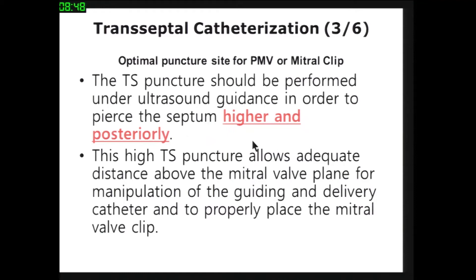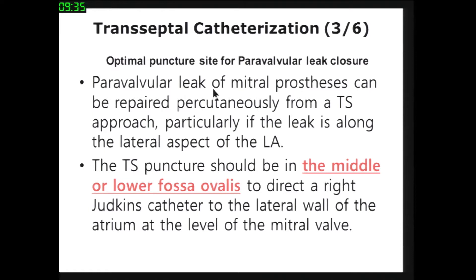For PMV or MitraClip, the mitral valve structure is located lower and anterior. Most transseptal puncture should be performed under ultrasound guidance to pierce the septum higher and posterior. The higher and posterior position allows adequate distance above the mitral valve plane for manipulation of the guiding and delivery catheter and to properly place the mitral clip or balloon. For paravalvular leak closure, the transseptal puncture should be in the middle or lower fossa ovalis to direct the catheter to the lateral wall of the atrium at the level of the mitral valve.